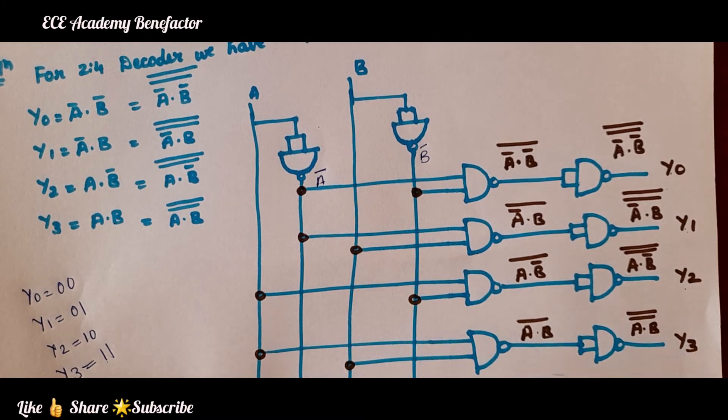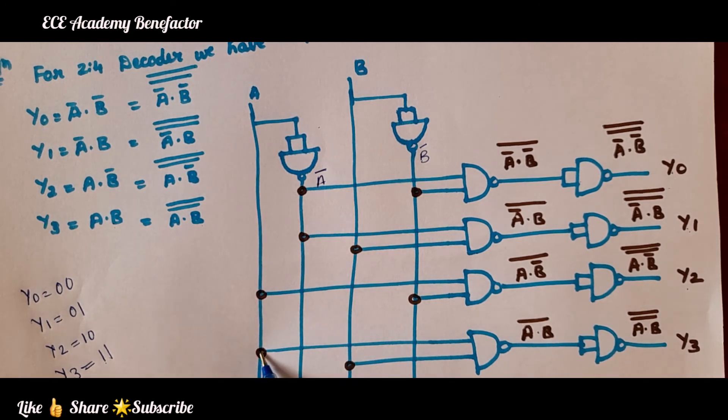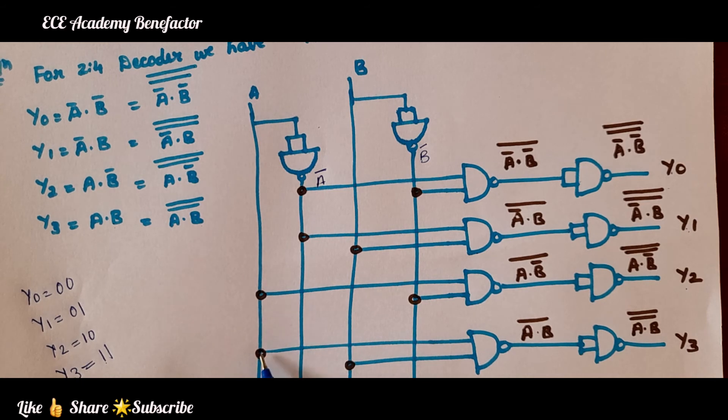Now, for getting y3 we need A. This darkened circle indicates it is A. If you do not darken this circle there will be no clarity whether this input is connected to A or A̅, B or B̅. When you darken it, it means that you have connected this input to A.